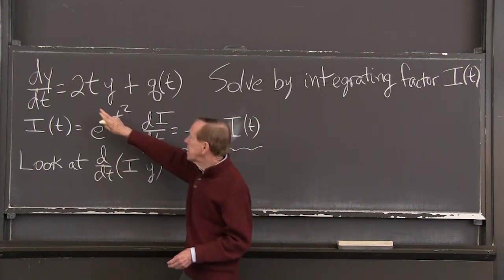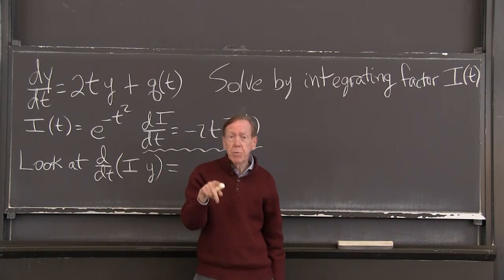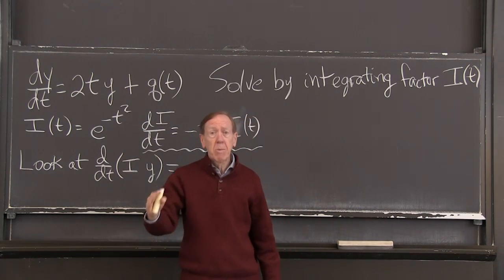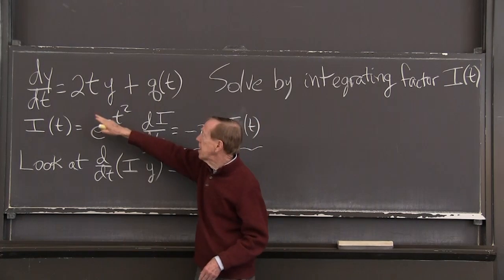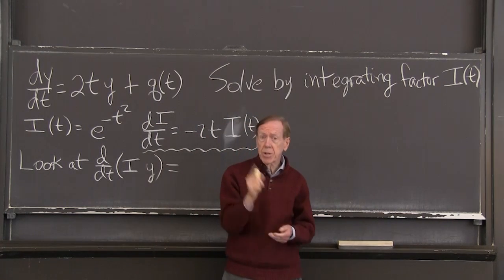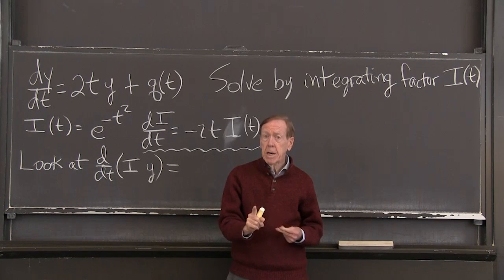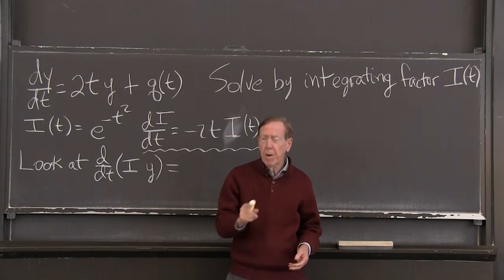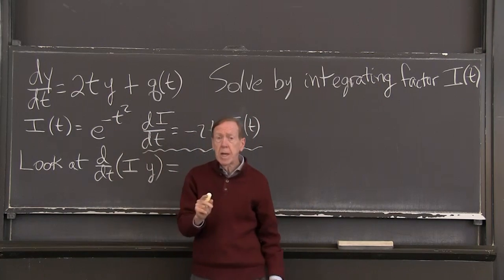The change is 2t. The interest rate A is increasing with time, changing with time. So we still have a linear equation, still just y. But the coefficient is varying. We have a variable coefficient, 2t.